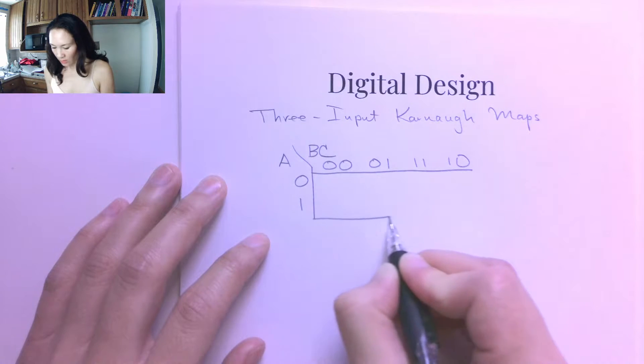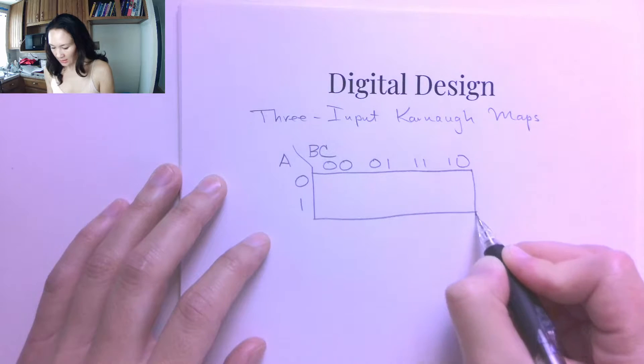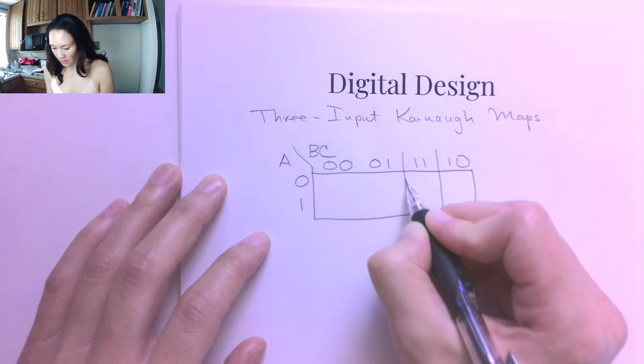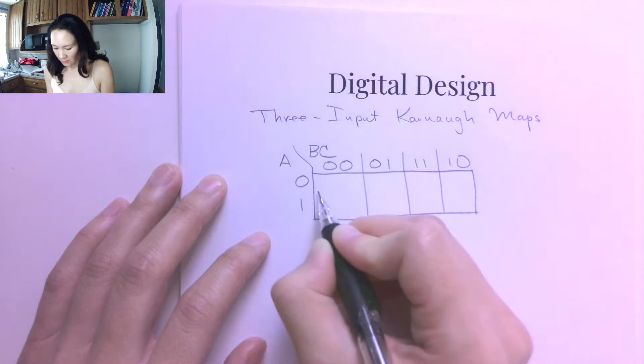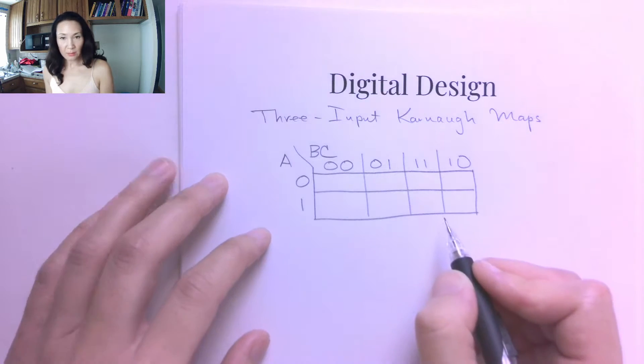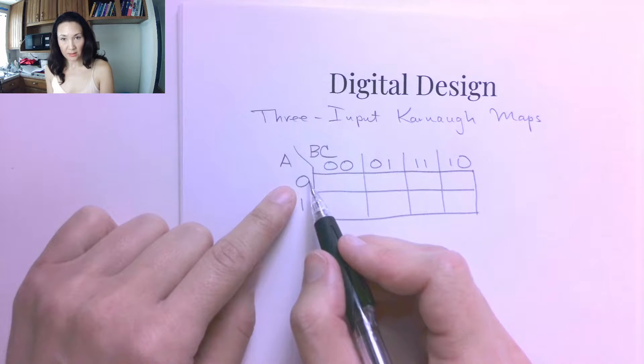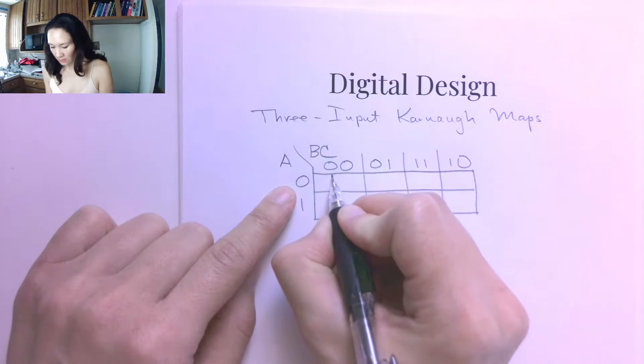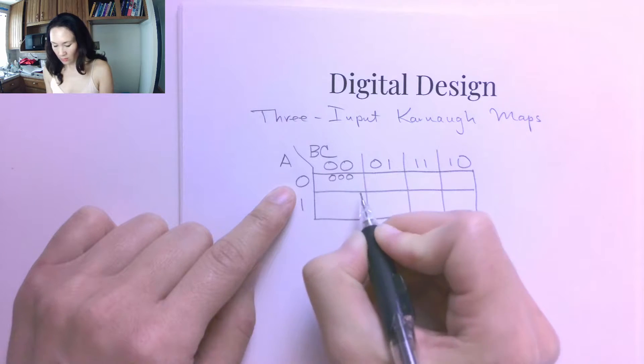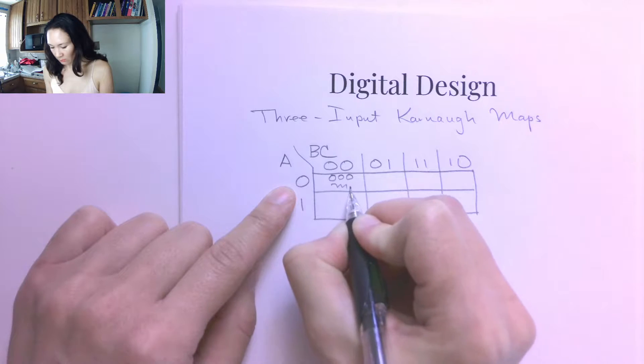So when I write out all those combinations, I can now turn this into a table. So in each of these positions, this cell here corresponds to when A is 0 and B and C are 0. So this is the value 0, 0, 0 on our truth table. In other words, this is min term 0.